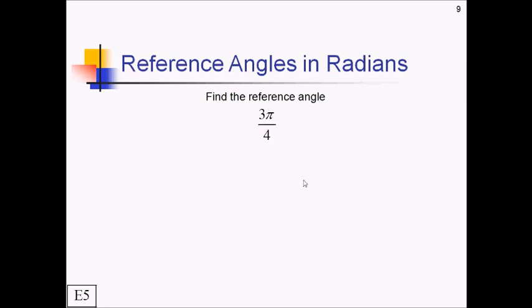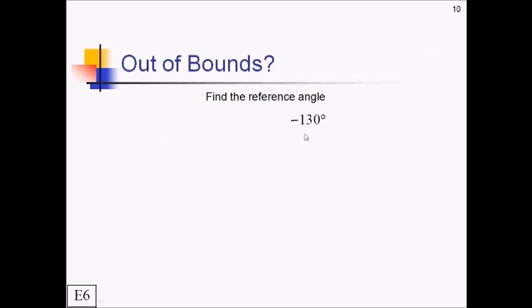Here's a problem where you need to find the reference angle. Pause the video and give it a shot. Now you had some options on this one. You could have tried to do this in radians, which I never do, or you could convert to degrees. In degrees, this would be, let's see, 180 divided by 4 is 45, converting to degrees now, and then 3 times 45 would be 135. What quadrant is that? Well, that's quadrant 2, so we need to figure out the distance between this and 180. That would be 180 minus 135, which is 45 degrees.